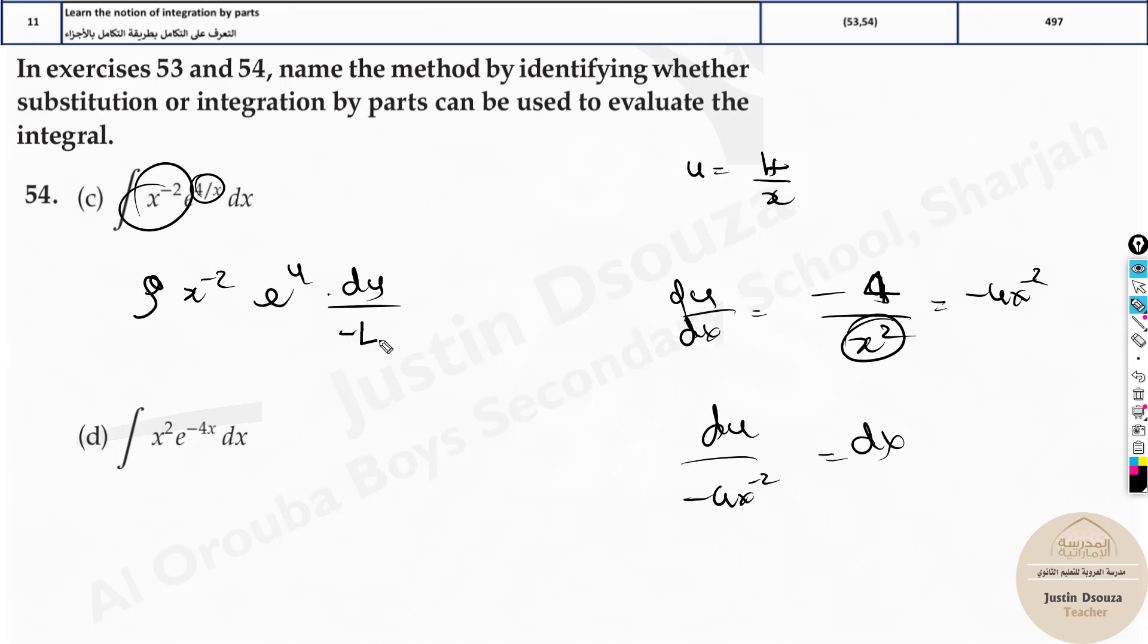So integral x to the power minus 2 e to the power u du by minus 4x minus 2. So this will cancel with this. You're remaining with a constant and everything in terms of u now. So it's possible to solve.